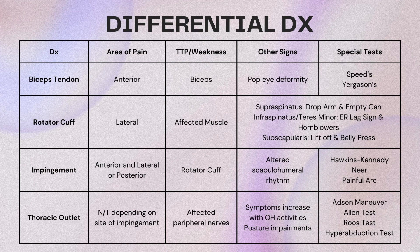For this type of differential diagnosis question, you can refer to a chart of differential diagnosis because the biggest factors are where the area of pain is and what the special tests are. You can confirm those findings with tenderness to palpation, areas of weakness, or other clinical signs unique to that injury. For example, a biceps tendon rupture would show a pop-eye deformity — very characteristic. The rotator cuff is going to be more lateral pain, impingement can be various parts of the shoulder with altered scapulohumeral rhythm, and thoracic outlet is primarily going to have numbness and tingling. Those special tests are key indicators of the type of diagnosis.